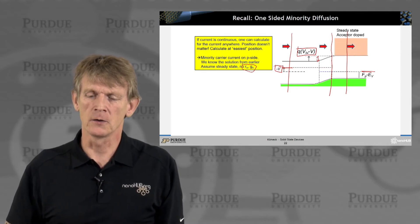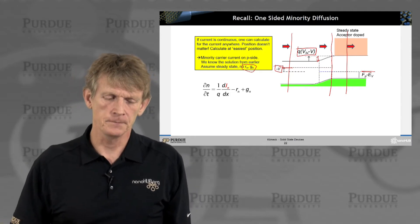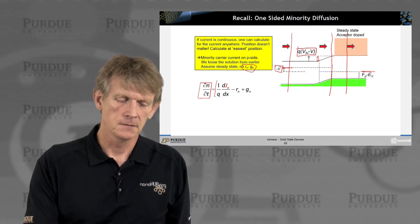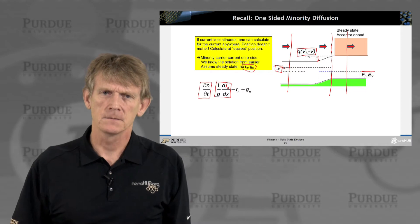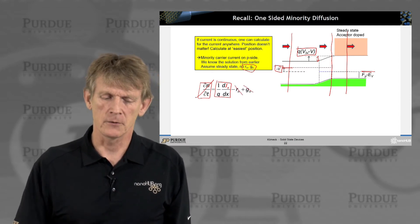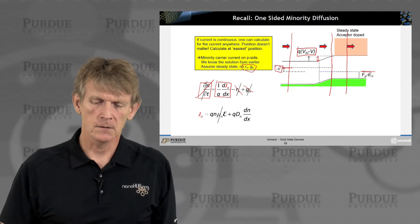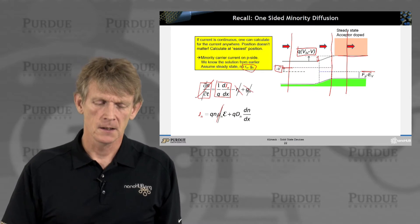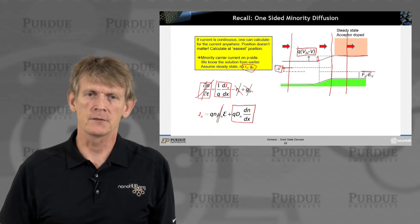So we'll look at steady-state flow in an acceptor-doped region and the current continuity expression. The change of electron density with time depends on a spatial change in current density or recombination and generation. We'll look at steady-state, canceling out the time dependence, and we'll neglect recombination and generation. We also have the drift-diffusion equation, and we assume zero electric field in this region, so we cancel out the electric field term. We're left with just the diffusion of electrons — diffusion-limited electron transport.